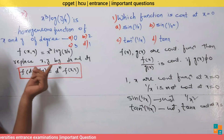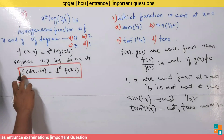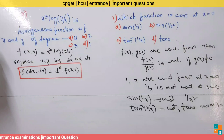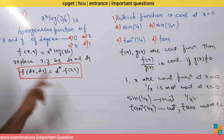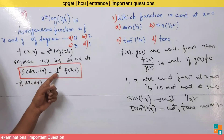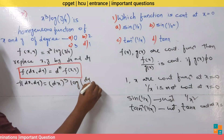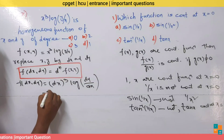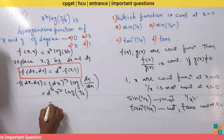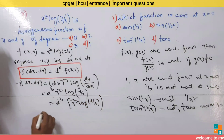To find the degree, we replace x and y by dx and dy respectively. Using the formula: f(dx, dy) equals d^n · f(x, y), where n is the degree of the homogeneous function. Substituting, we get f(dx, dy) equals (dx)³·log(dy/dx), which equals d³·x³·log(y/x).